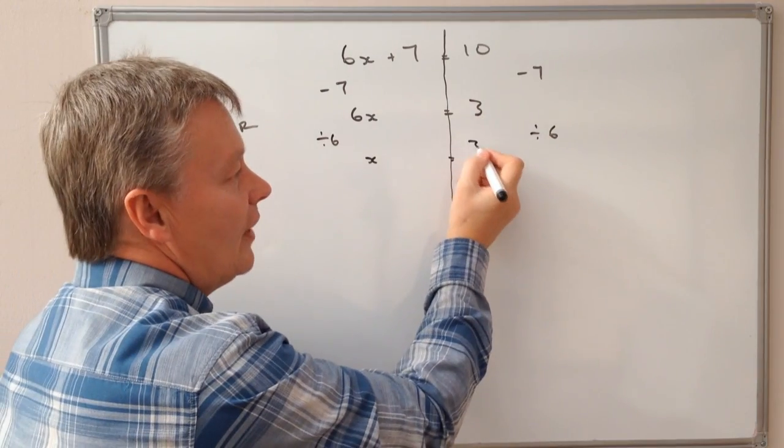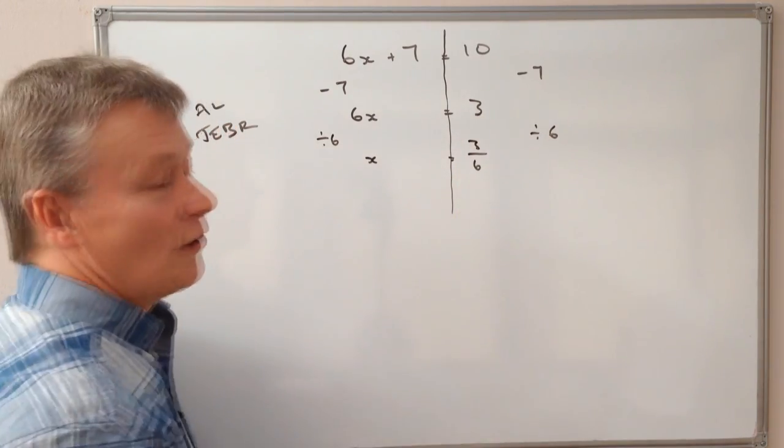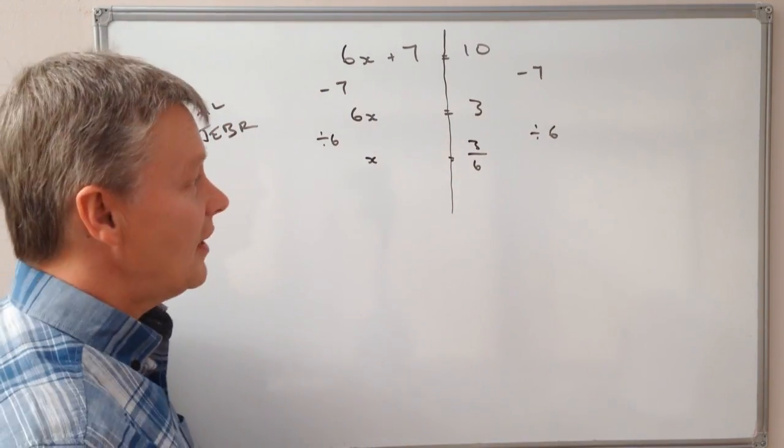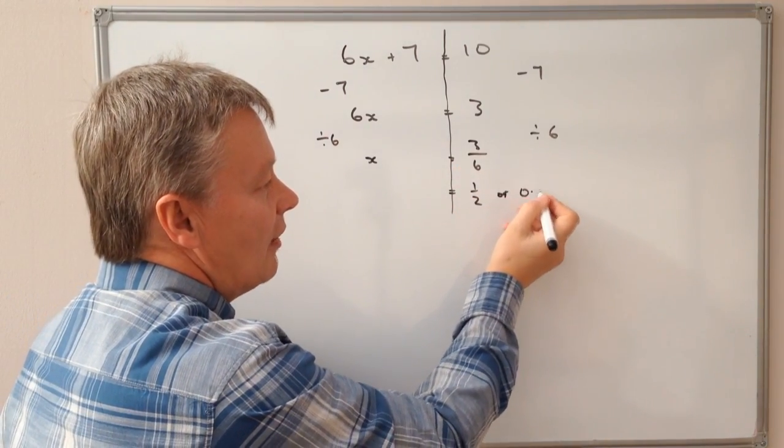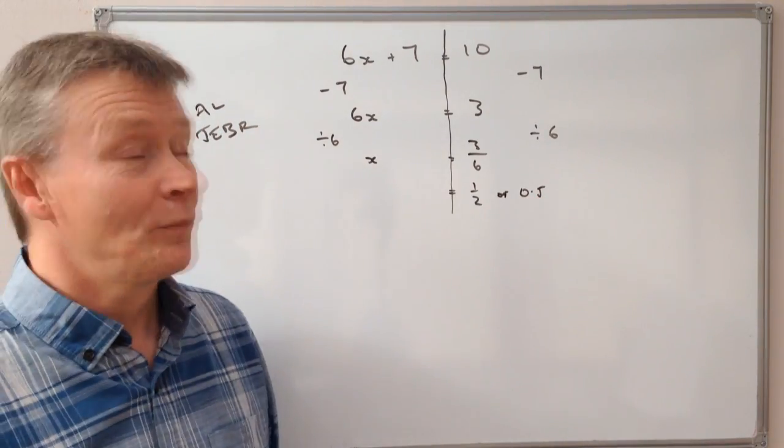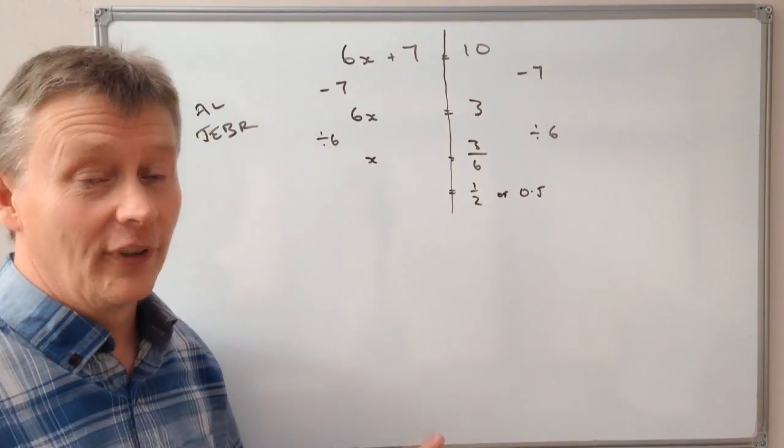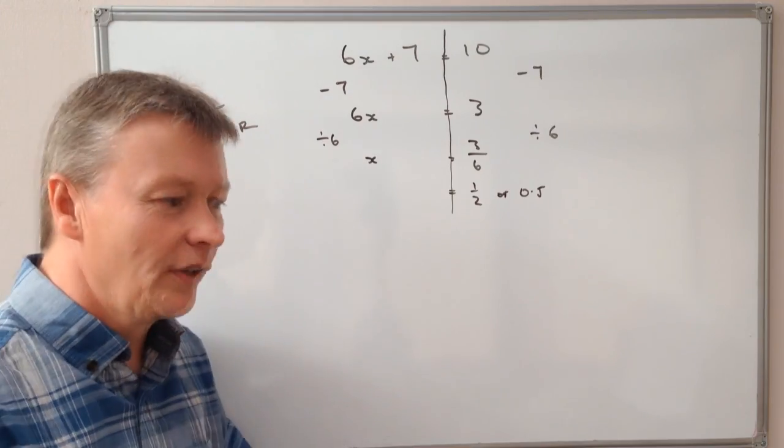On this side, I get 3 over 6, or 3 divided by 6. And I can simplify that a little bit to a half or 0.5 as a decimal. And that's pretty much how you deal with linear equations.